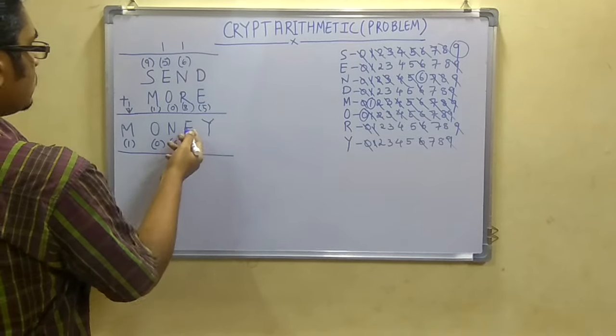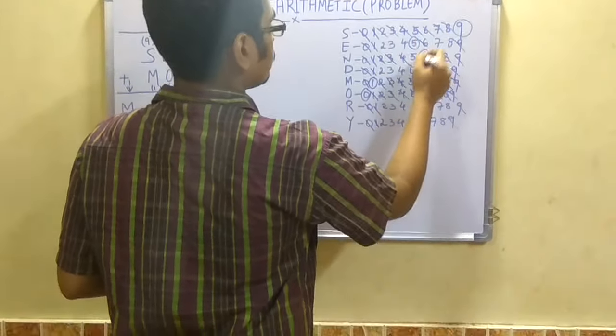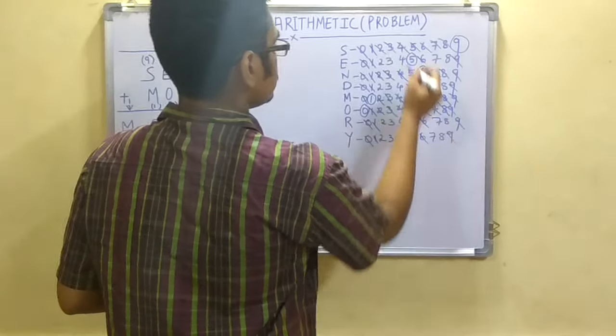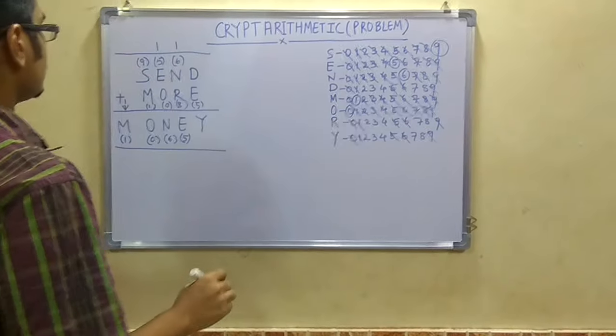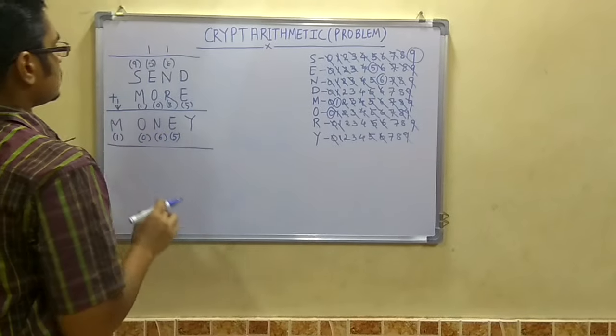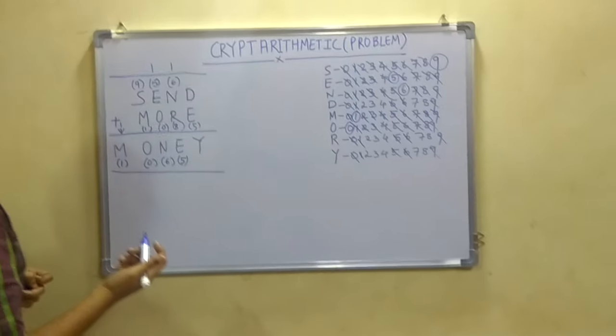As well as E is 5. So E is 5. And cancel these 5s. So cancel this. Next is you have to assign D. Now how will you assign D?